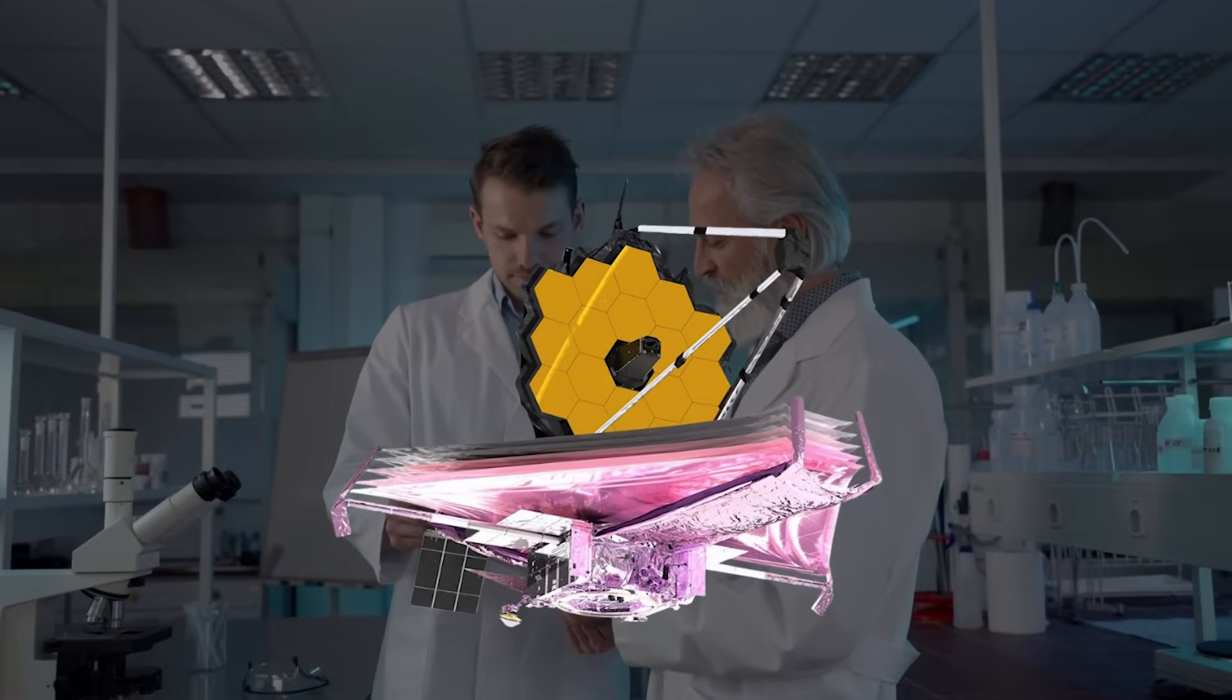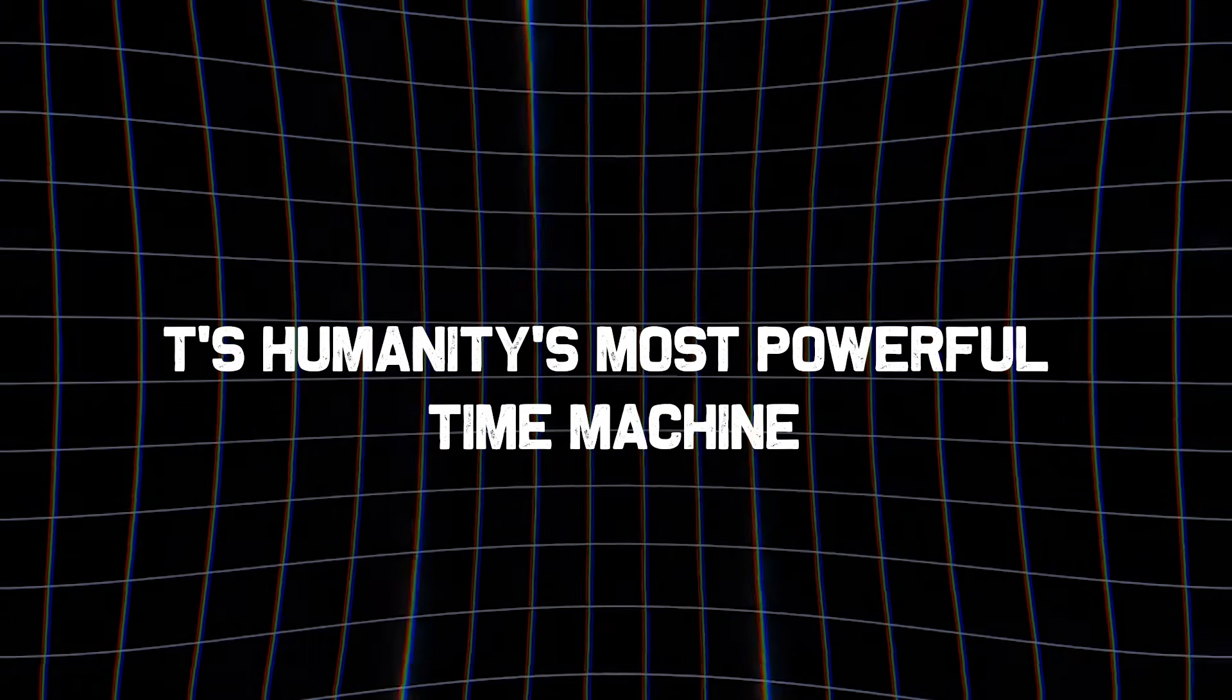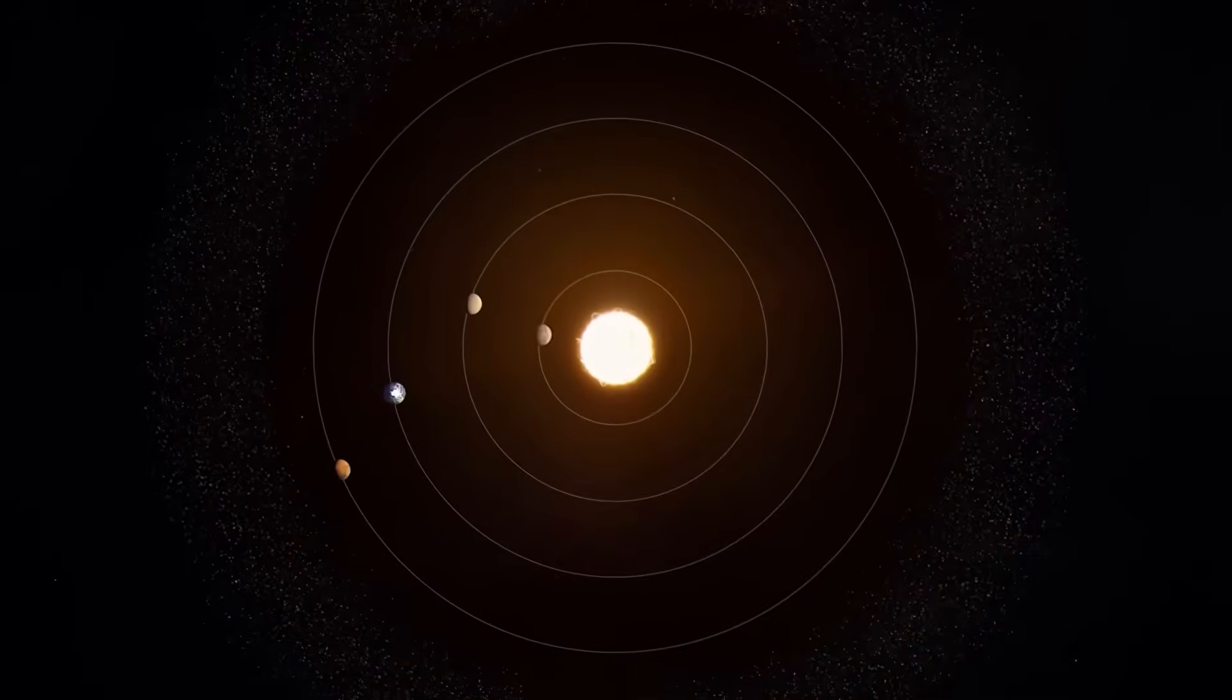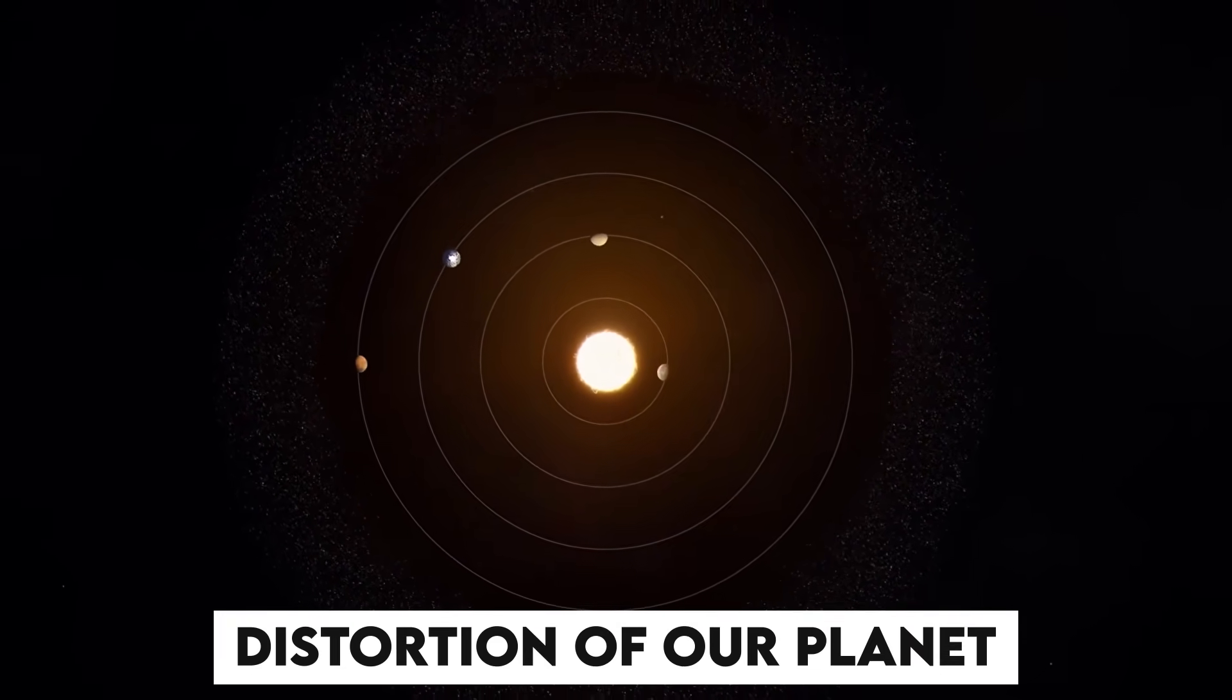The James Webb Space Telescope isn't just another space camera. It's humanity's most powerful time machine. Sitting a million miles from Earth at the Lagrange Point L2, it's far from the heat, glare, and distortion of our planet.